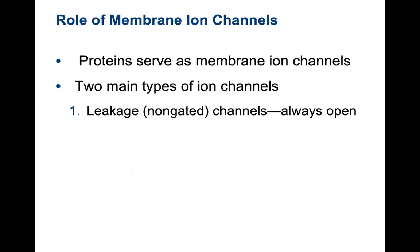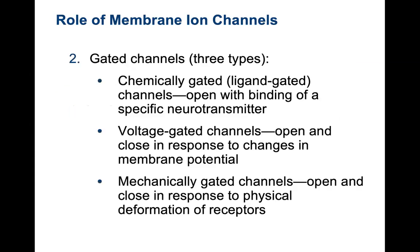Membrane channels play a very important role here. Proteins serve as membrane ion channels, and there are two types. We have leakage or non-gated channels — these are always open. Then you have gated channels. Chemically gated channels are ligand-gated, meaning they open and close by the binding of a specific neurotransmitter. Voltage-gated channels open and close in response to changes in membrane potential. Mechanically gated channels open and close in response to physical deformation of the receptors.